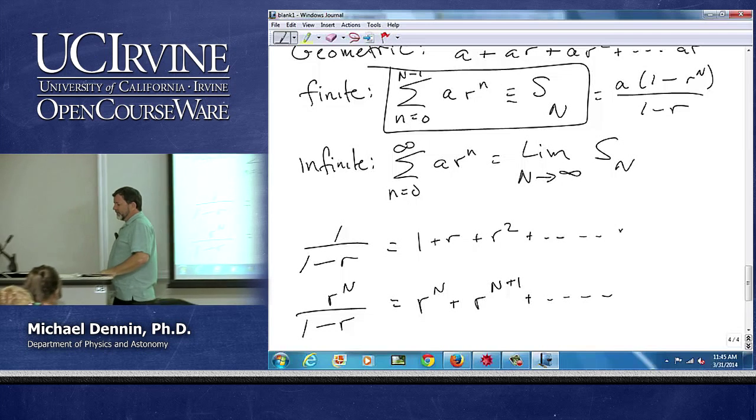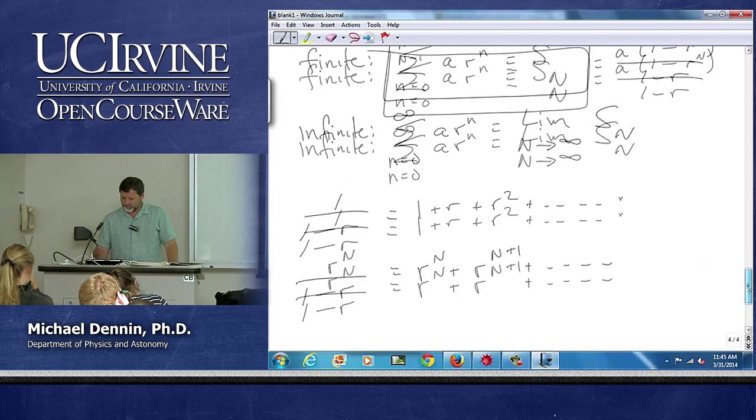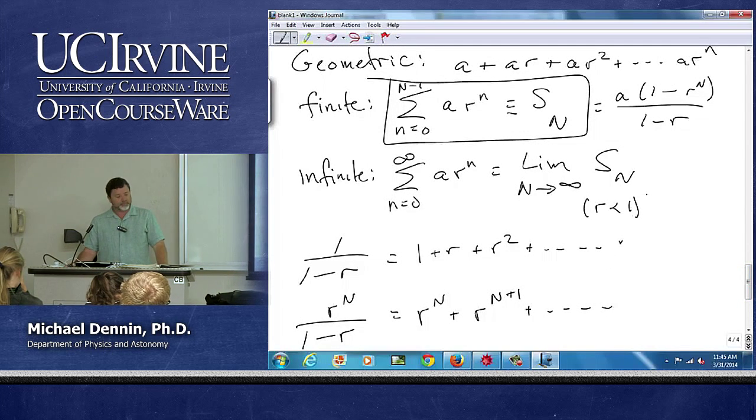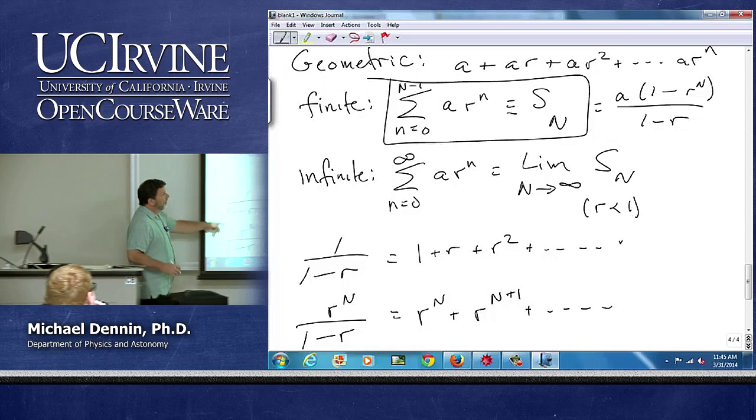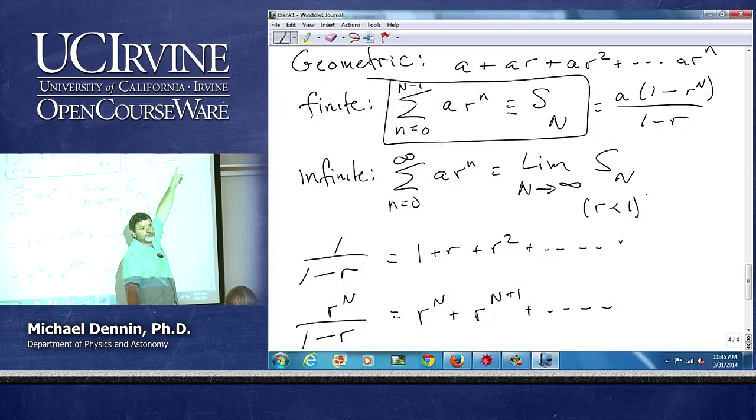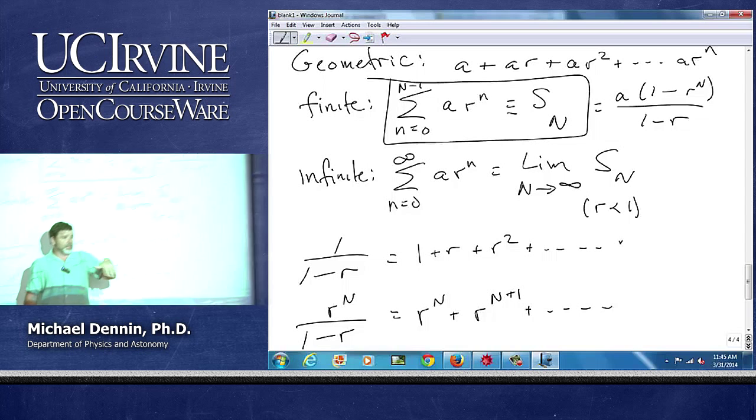And now I have a nice formula for taking the limit as n goes to infinity. As long as r is less than 1, then when I take n goes to infinity, r to the n goes to what? If r is less than 1, r to the n goes to 0.